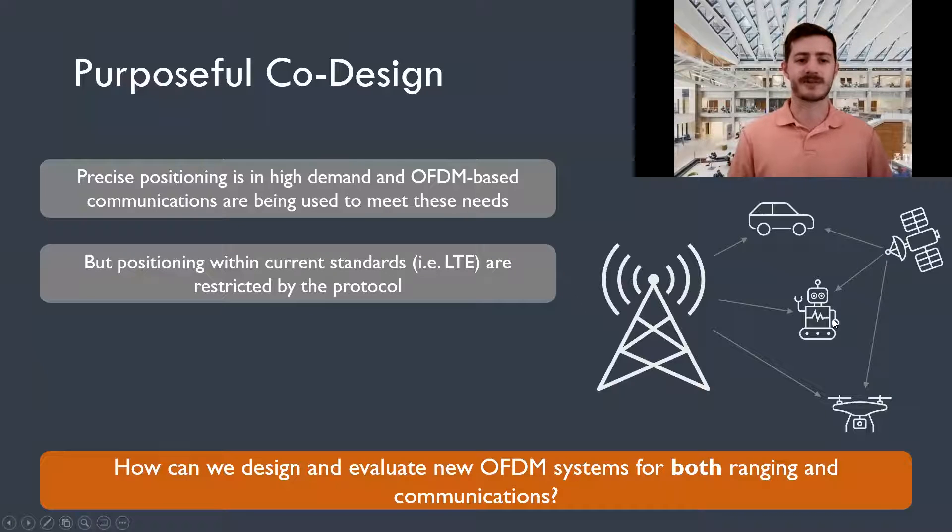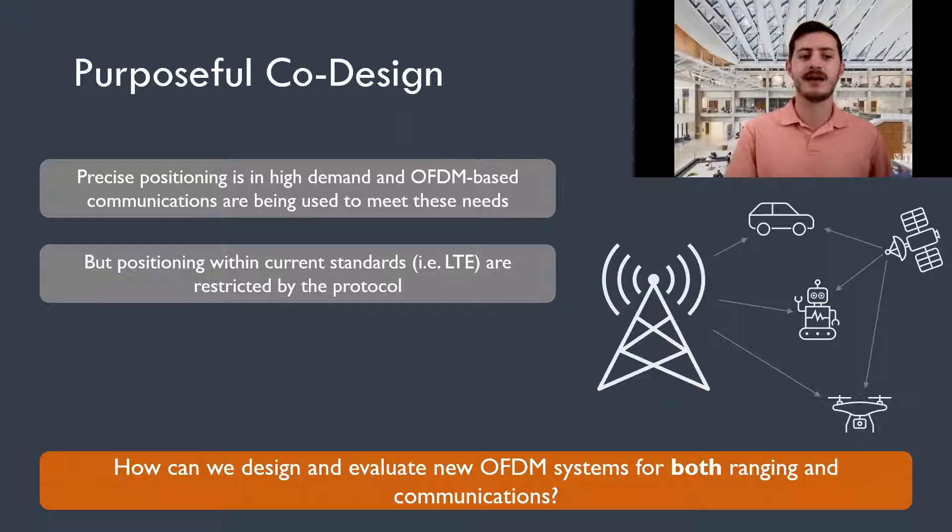So what do I mean when I say purposeful co-design? Well, currently we're seeing an incredibly high demand for precise positioning. However, many of those applications are turning to using OFDM-based communication networks to meet their positioning needs. However, the positioning protocols within these standards are a bit restrictive and were designed as more of an afterthought or secondary priority to communications data rate. So we're interested in the problem of how can we design and evaluate new OFDM systems for both ranging and communications.